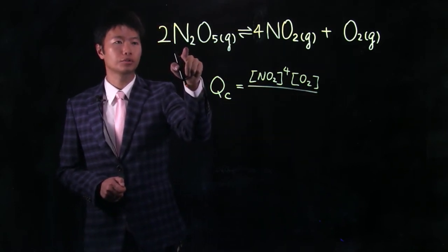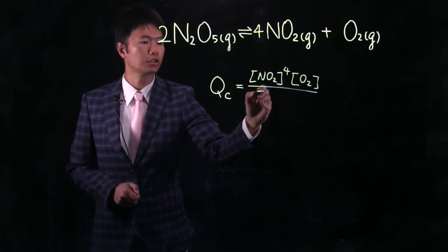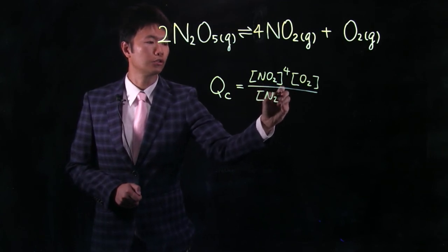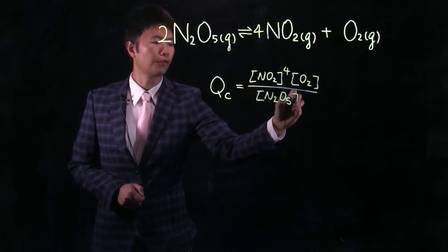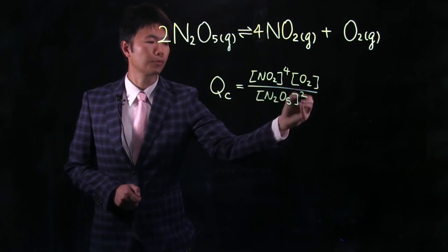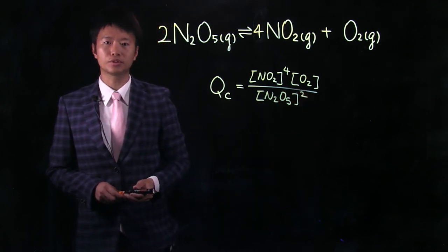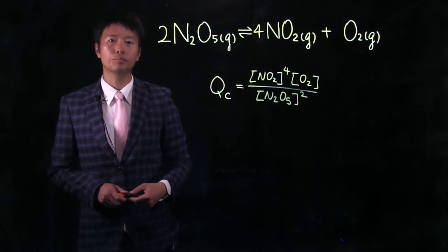Then we have the concentration of the reactant side, which is N2O5 to the second power. That's it. This is the reaction quotient for the decomposition of dinitrogen pentaoxide.